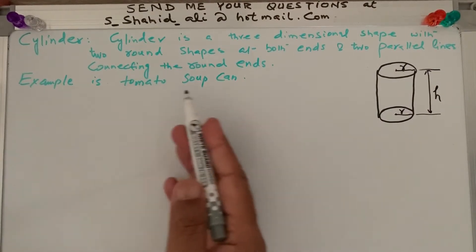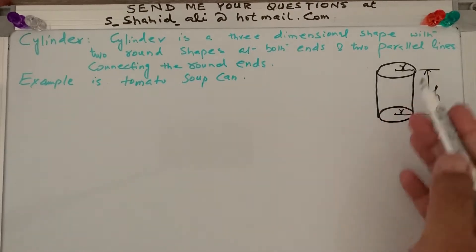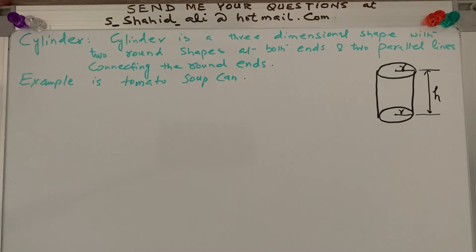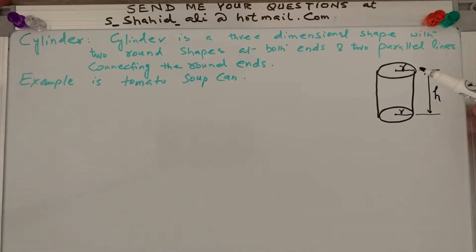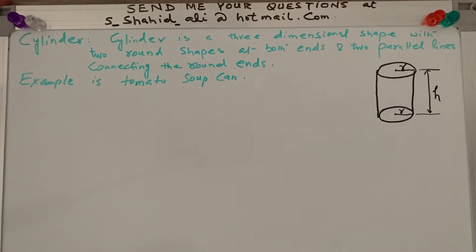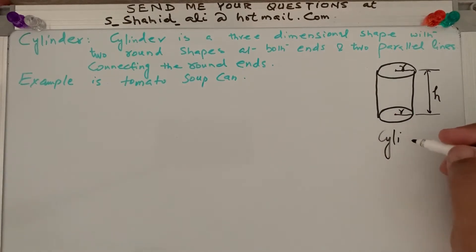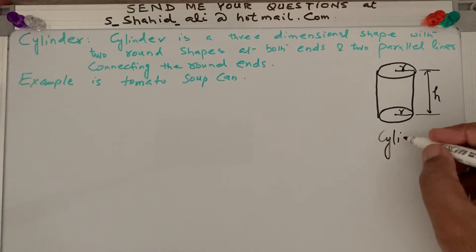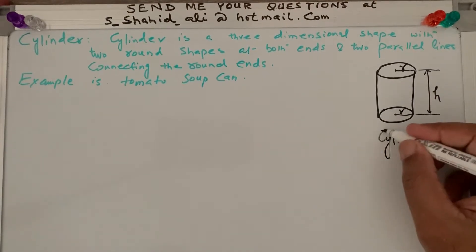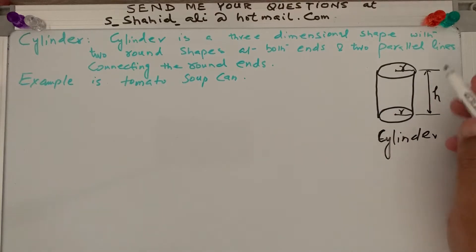Our example is a tomato soup can — any can you see in this format is a cylinder. You can list many things around you which are cylinders. So there are two variables: one is the height of the cylinder, and the other is the radius of the circular or round shapes.